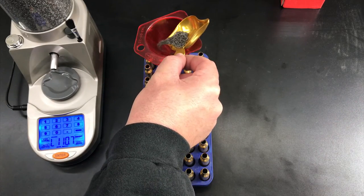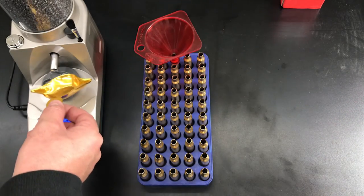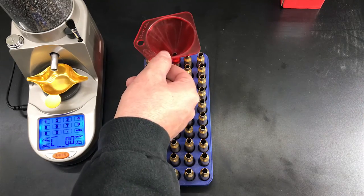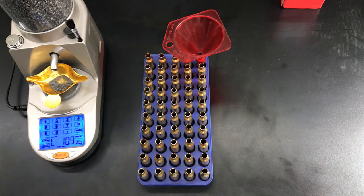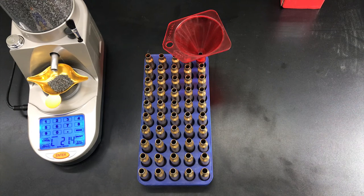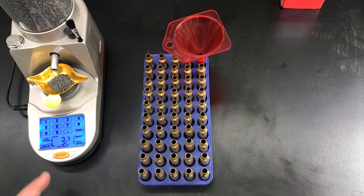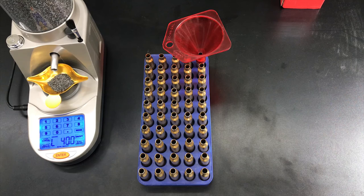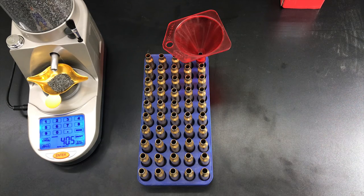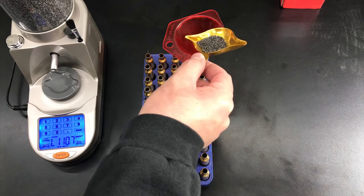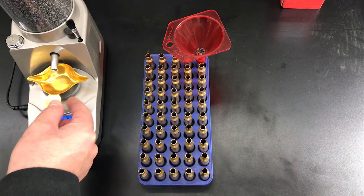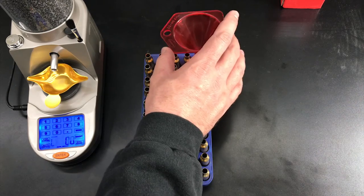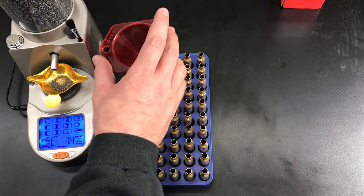Now usually I would actually be seating bullets as I pour, so I would pour and seat the bullet while this powder dispenser dispenses the next charge. But for filming purposes it's a little too hard to set up the camera to get both dispensing and seating at the same time.